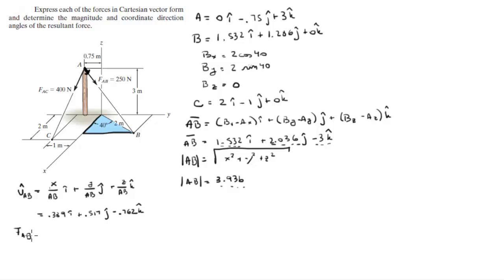So force AB is going to be equal to the magnitude of the force times the unit vector. So you multiply by each of the ones and you're going to get that the magnitude times the x, the magnitude times the y and the magnitude times the z, and it's going to give you the three values.